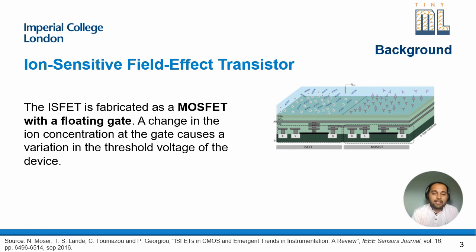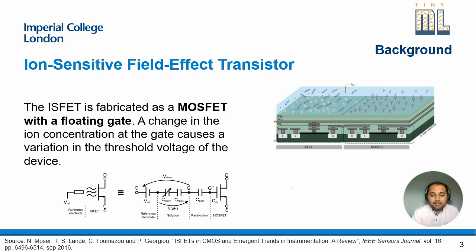Here we have ion-sensitive field effect transistors, also known as ISFETs. These are basically fabricated as a MOSFET with a floating gate. Any change in the ion concentration on the surface presents itself as a change in the threshold voltage of the device. Since a MOSFET sits right next to the ISFET, these can be created in unmodified CMOS technology. To model an ISFET, you extend the gate to the top layer, use capacitances to model the passivation layers and solution, and model the reference electrode using a voltage source.